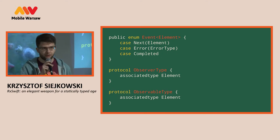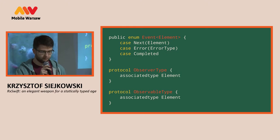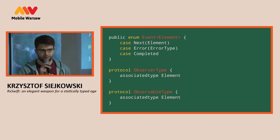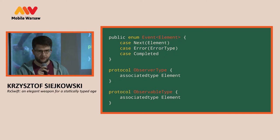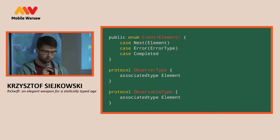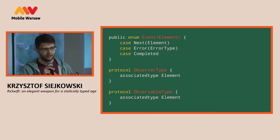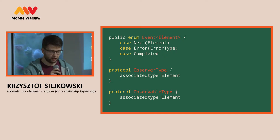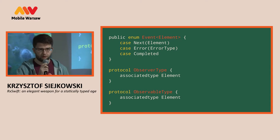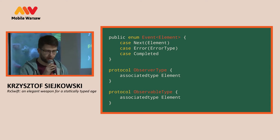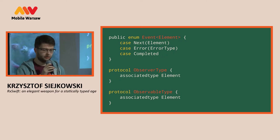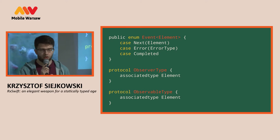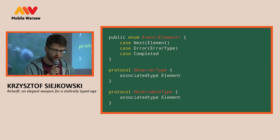In Swift it's modeled using enums. The event is an enum which has three cases — it can either be a next event that carries some data, or error that carries an error type, or completed. Please notice that it is a generic enum. It has a generic parameter but only over the type of data that is being carried, not over the type of an error. And that's by design — it was made this way to make it easier to compose observables.